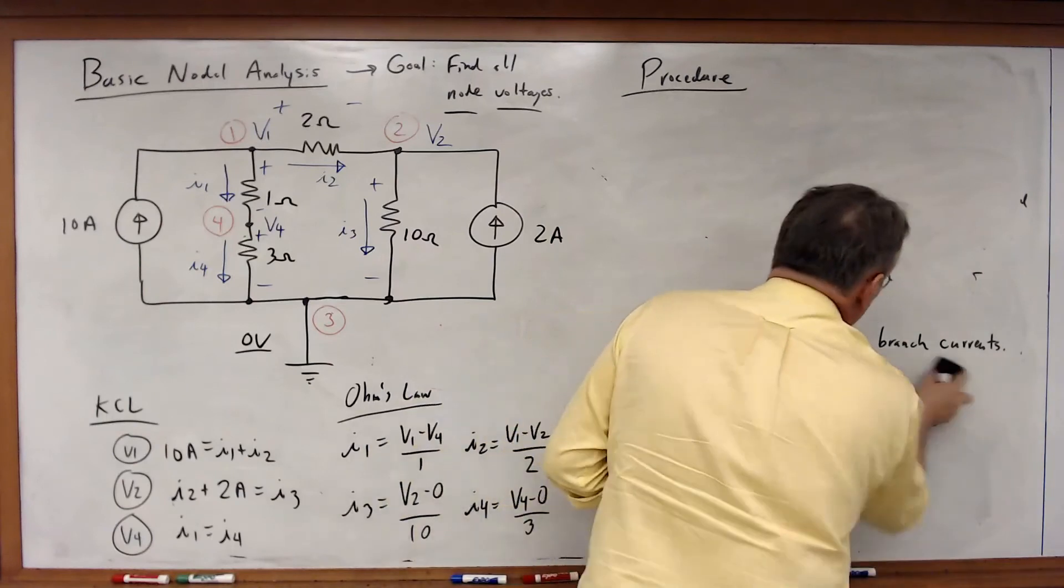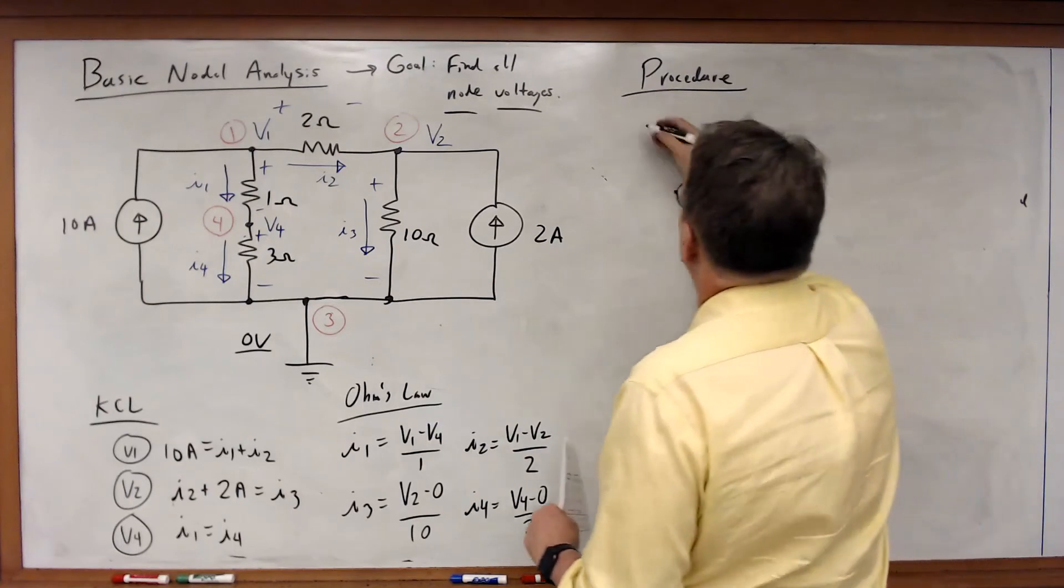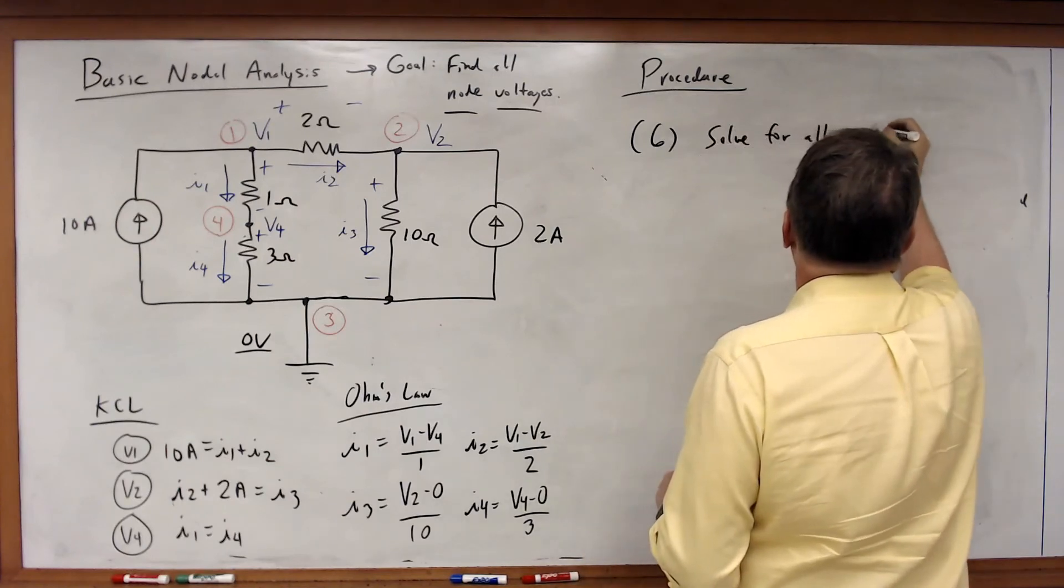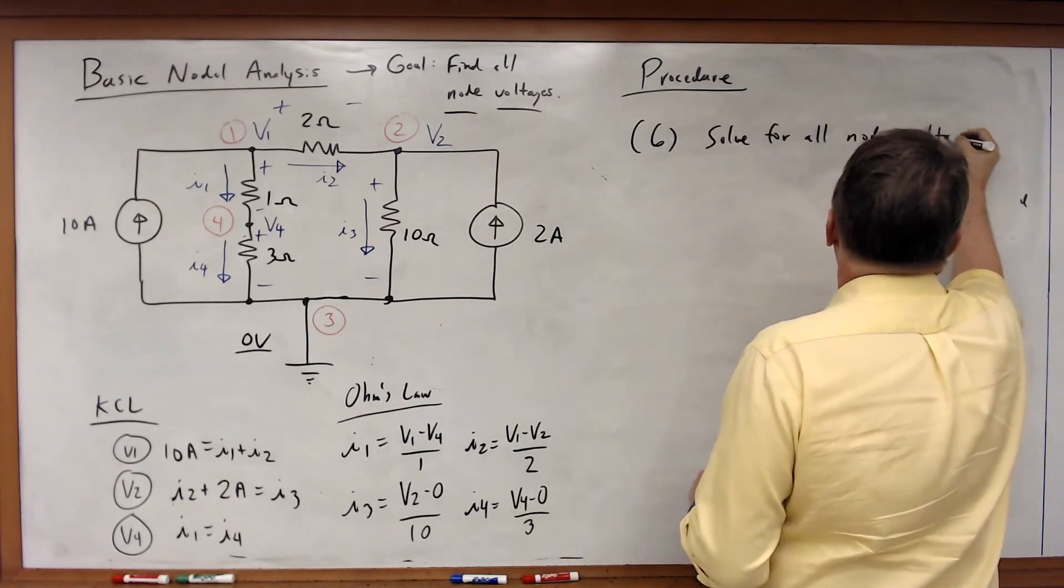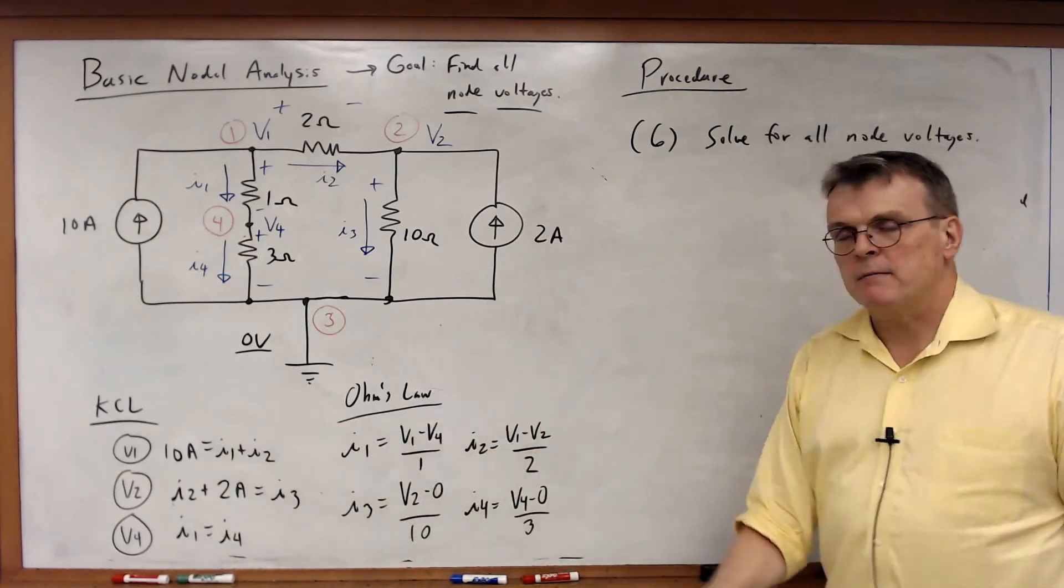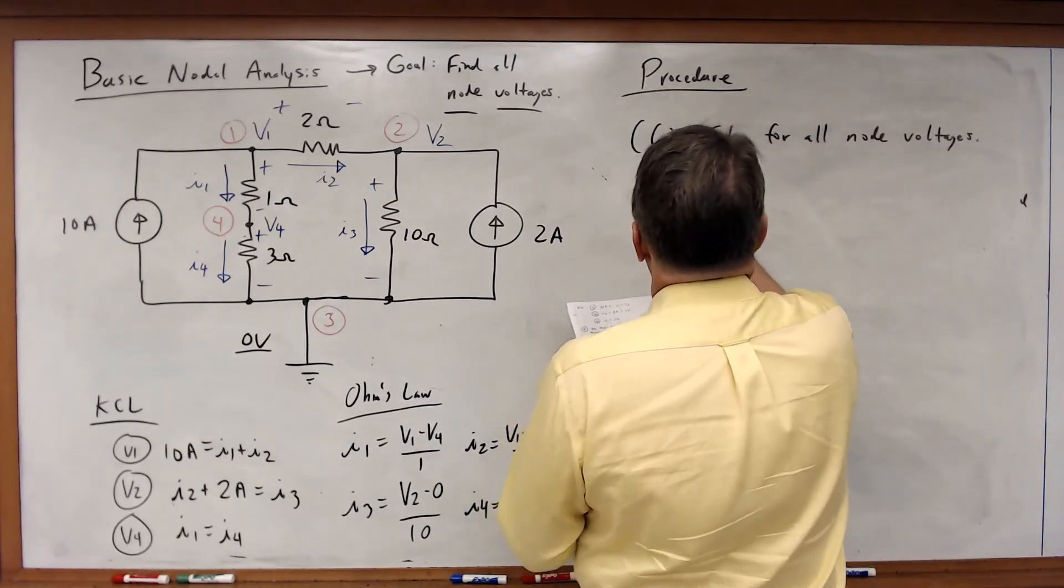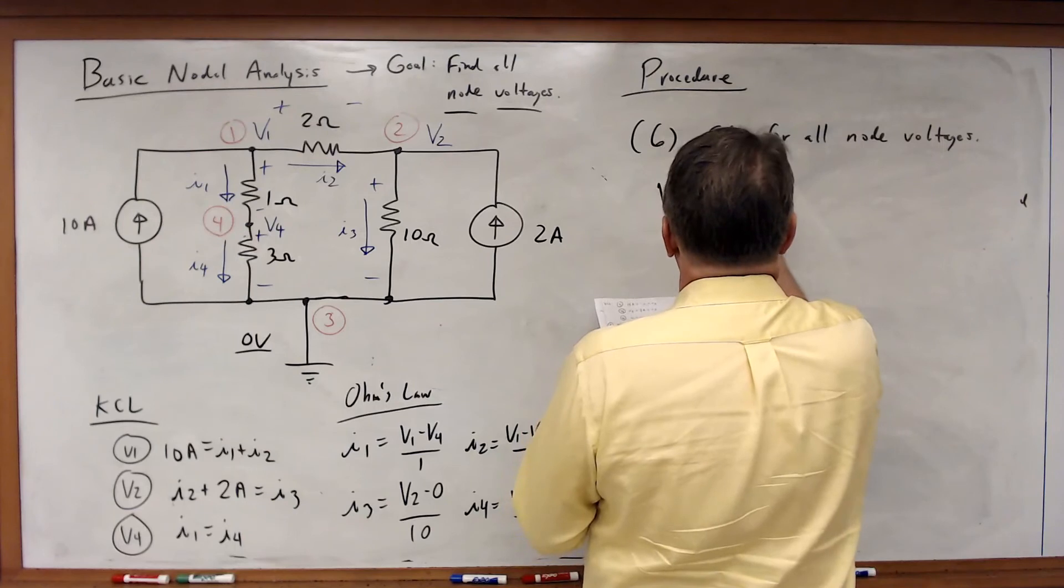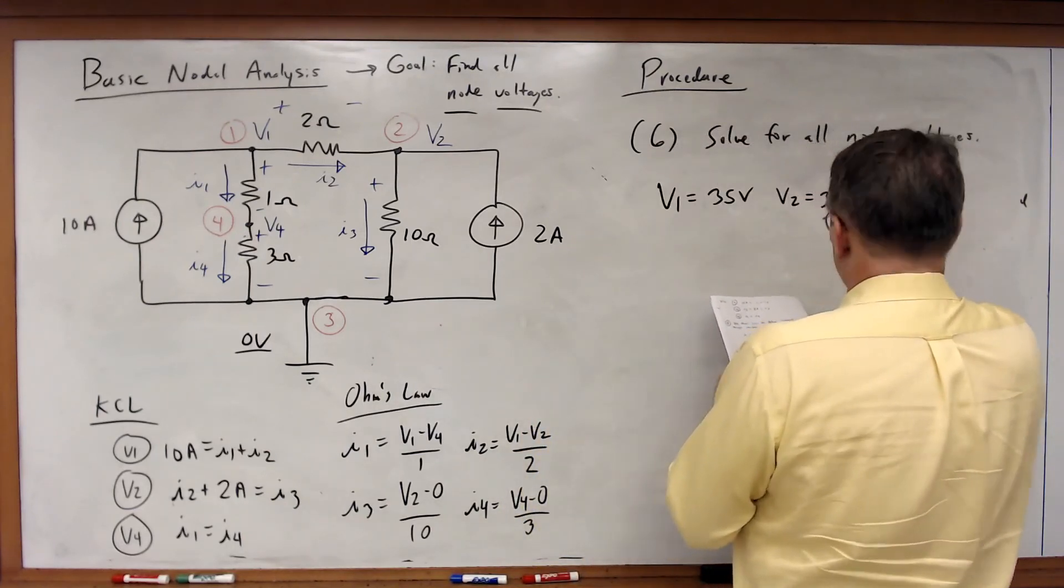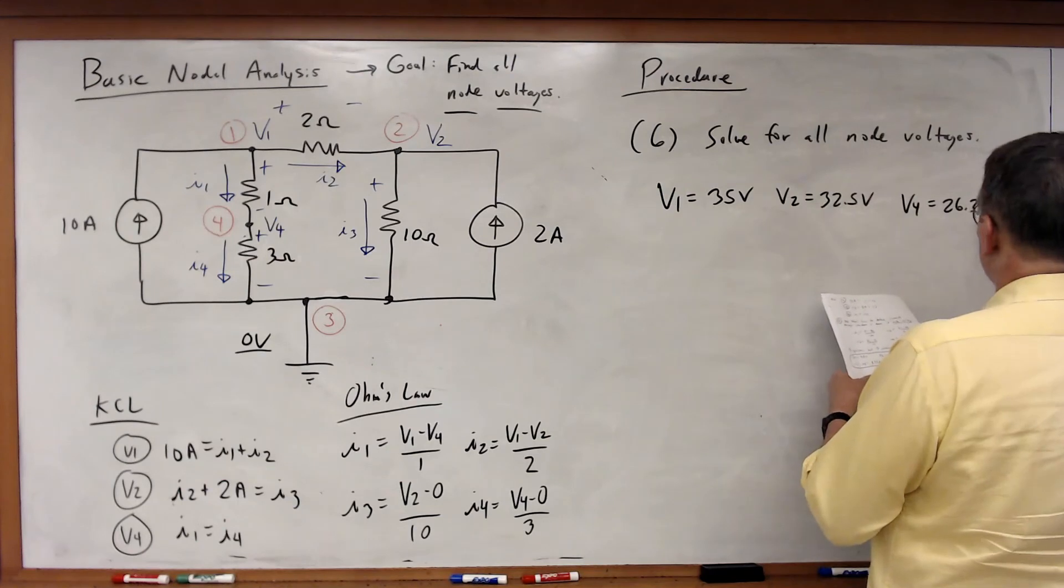So our last step. Solve for all our node voltages. And at this point, you can just take those seven equations and put them right into Mathematica. Hit Shift-Enter. Solve. And what you're going to get is that V1 is equal to 35 volts. V2 is equal to 32.5 volts. V4 is equal to 26.25 volts.